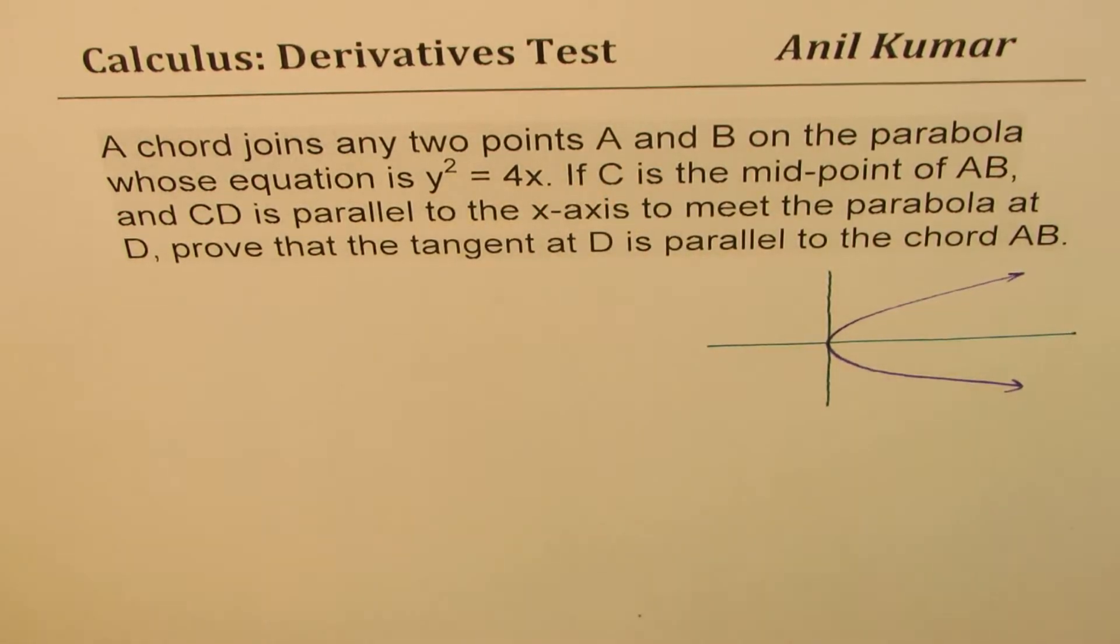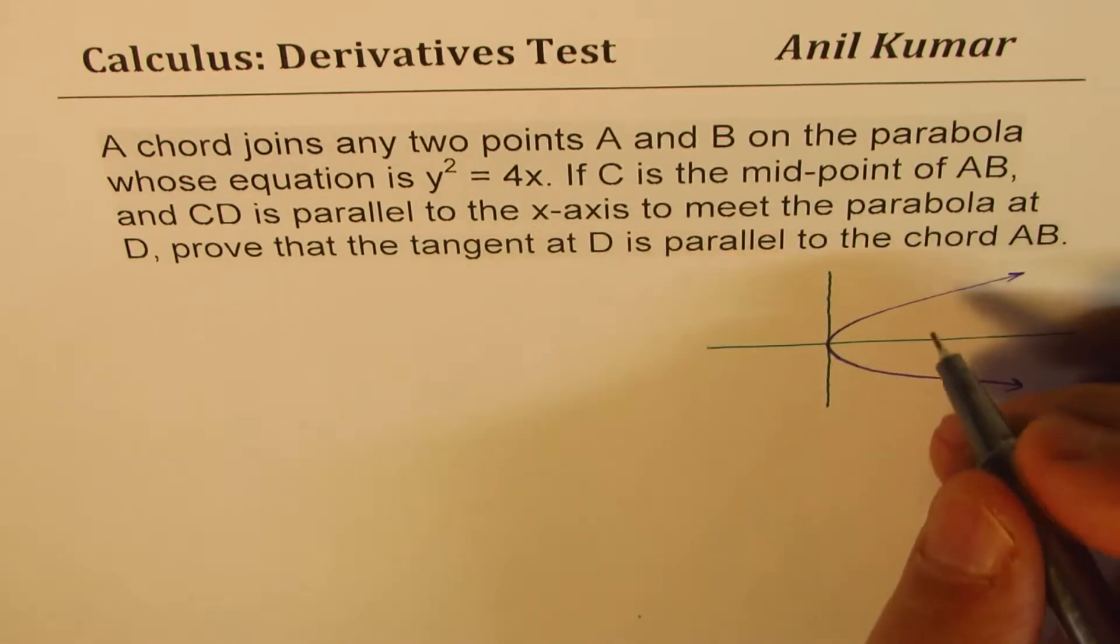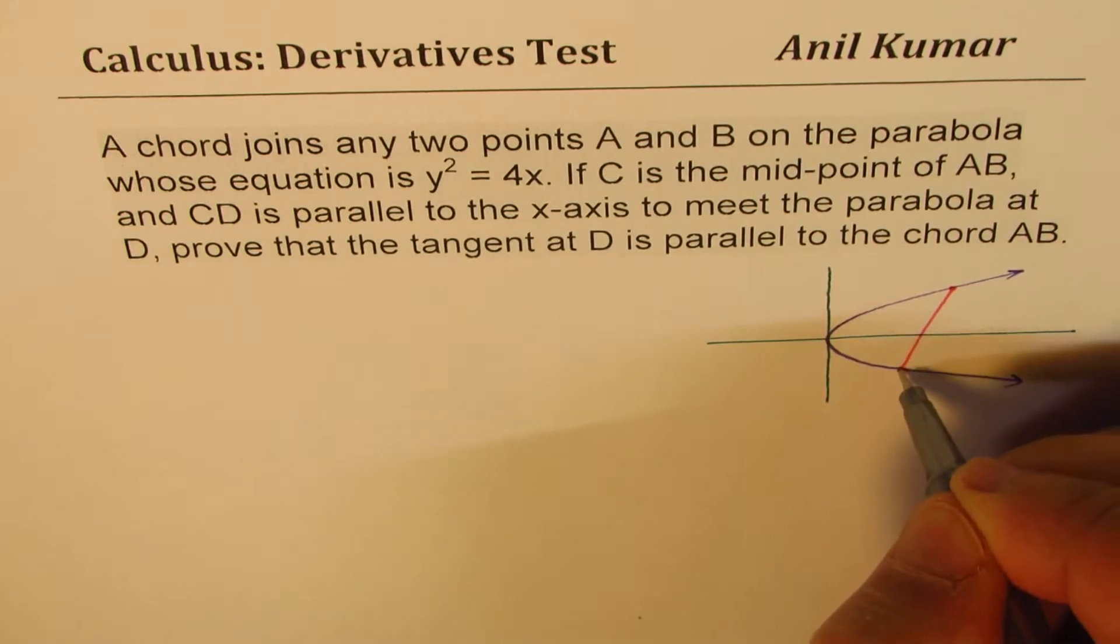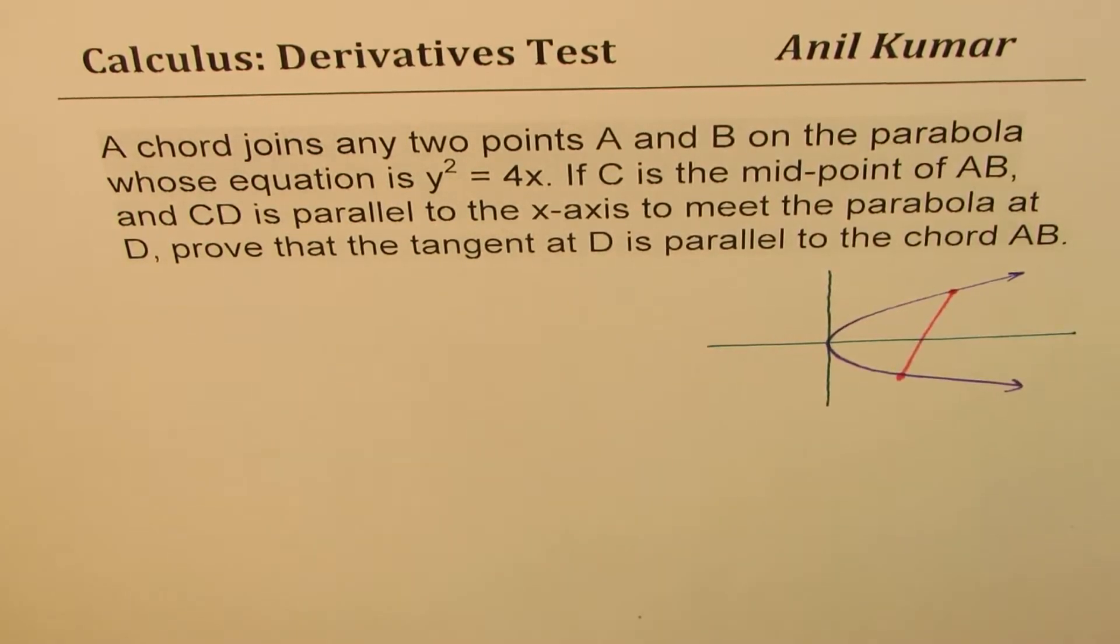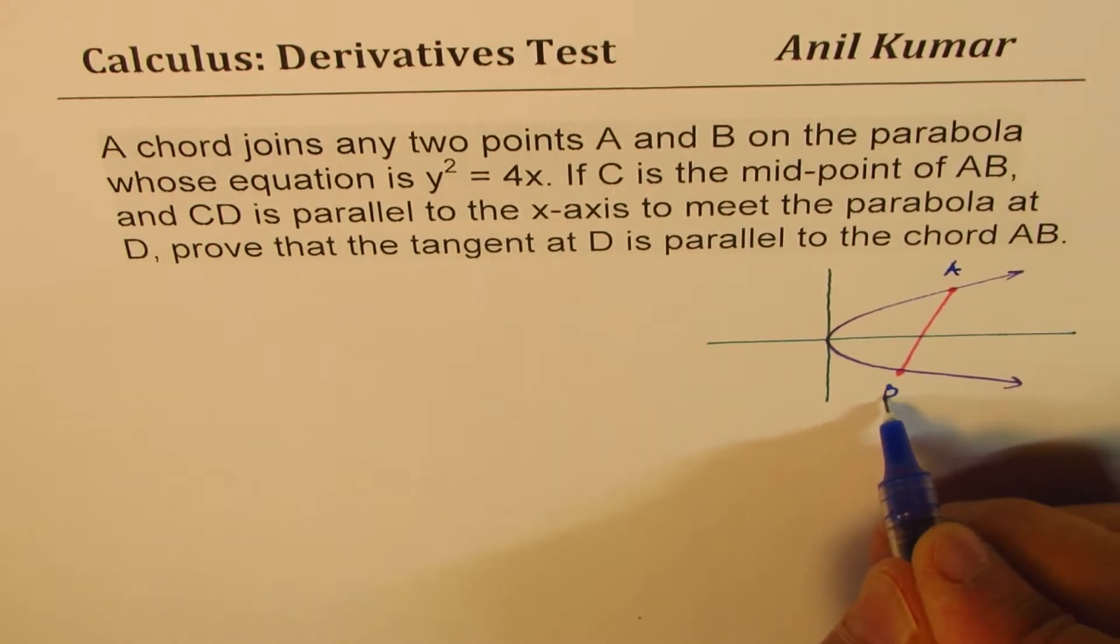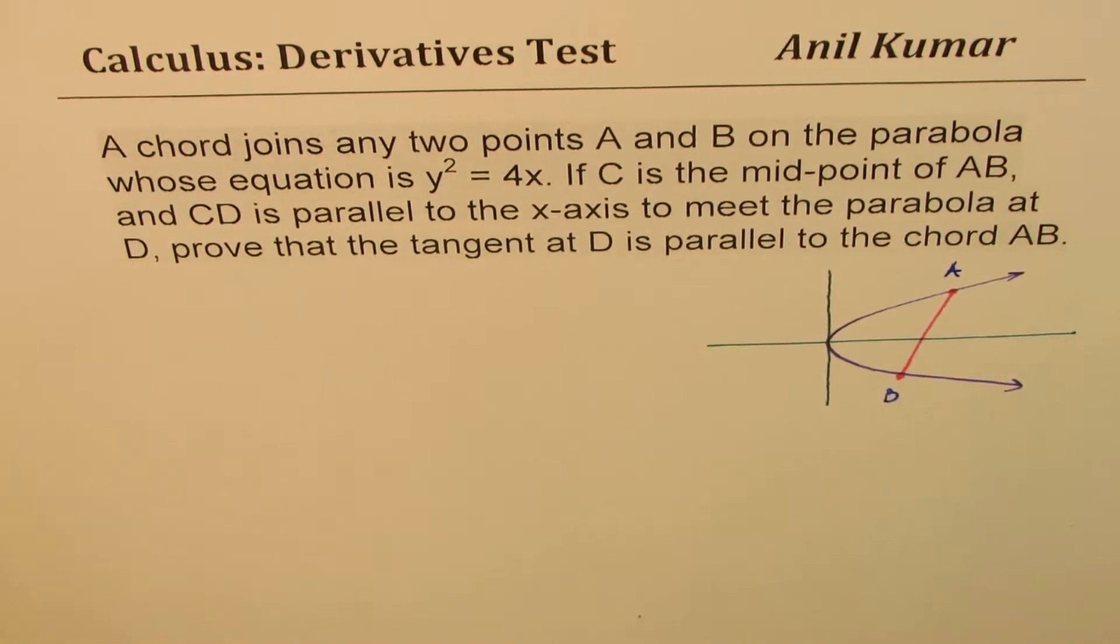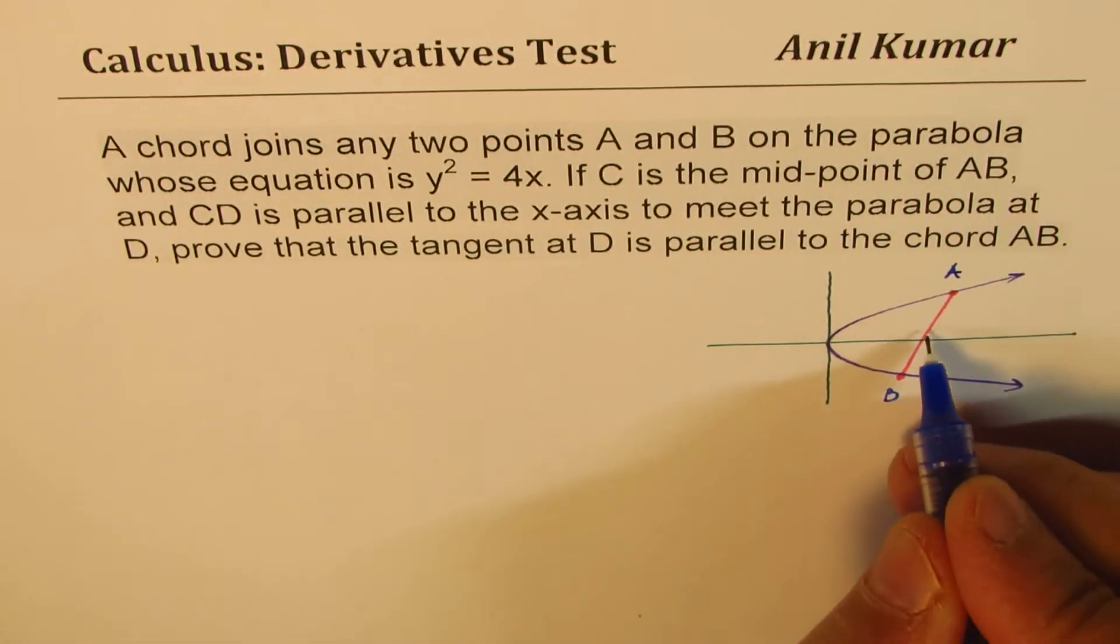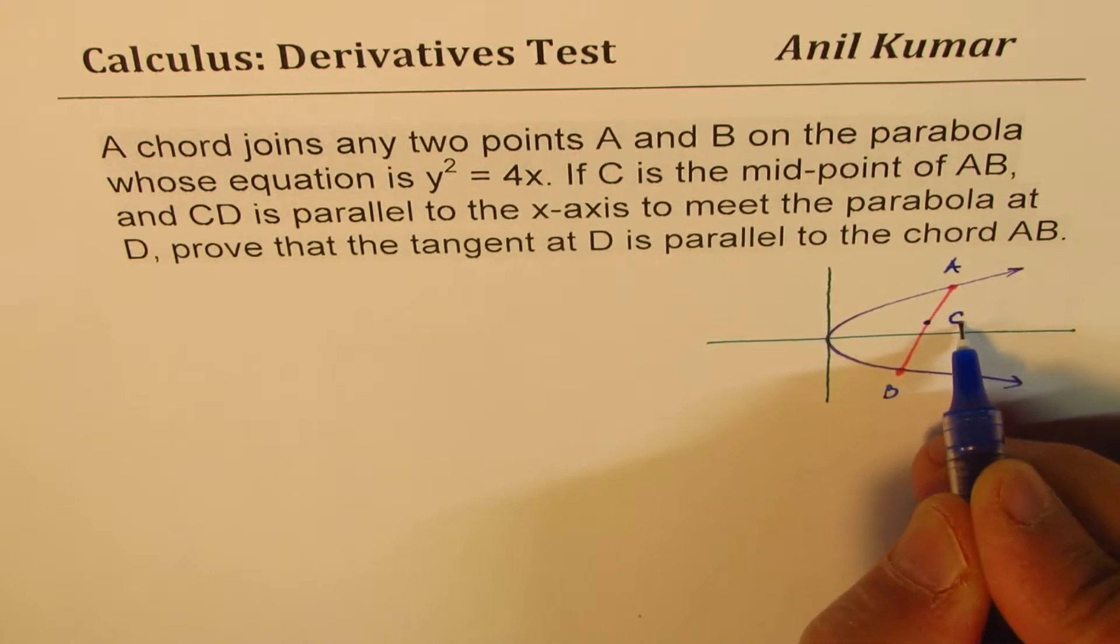We need to take any two points A and B. So let's take any two points and join them, forming a chord. Let's say these are the points A and B for us. Now it says that C is the midpoint of AB.